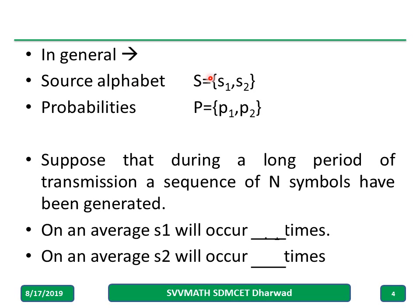Now in general, let us consider a source with symbols s1 and s2, with probabilities p1 and p2. Suppose these are generated continuously for a long period of transmissions — a sequence of N symbols. On average, how many s1 will there be? For equiprobable symbols it would be N/2, but since they are not equiprobable, how many s1 might have been transmitted? The count is N times p1. Similarly, how many s2 on average? That would be p2 times N.